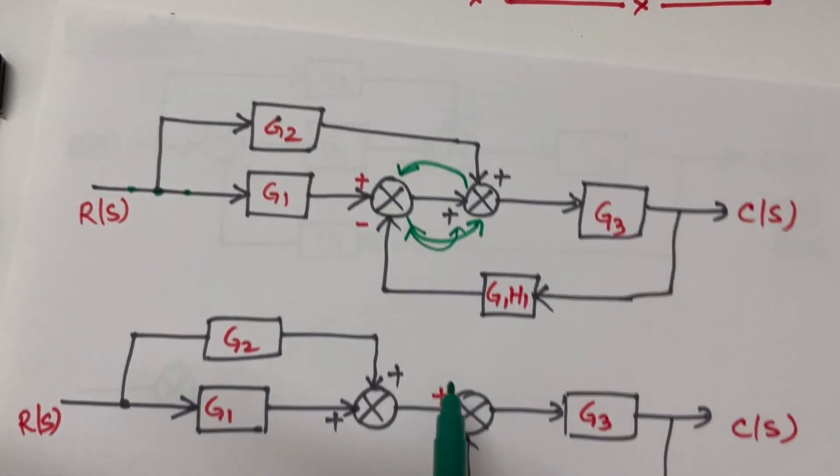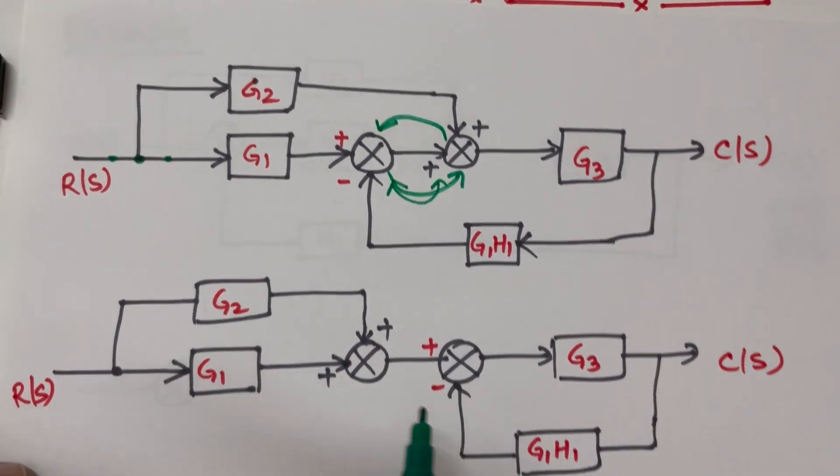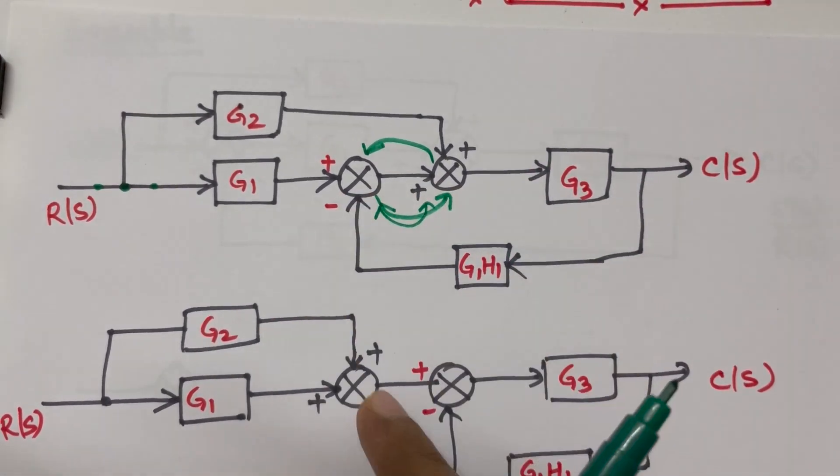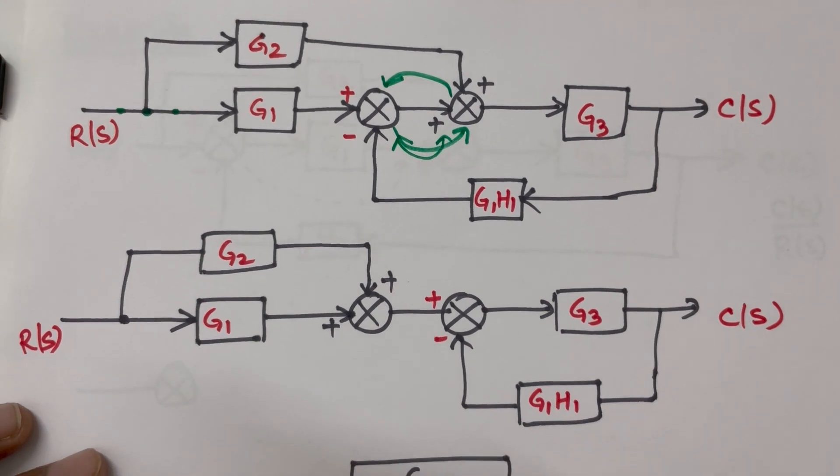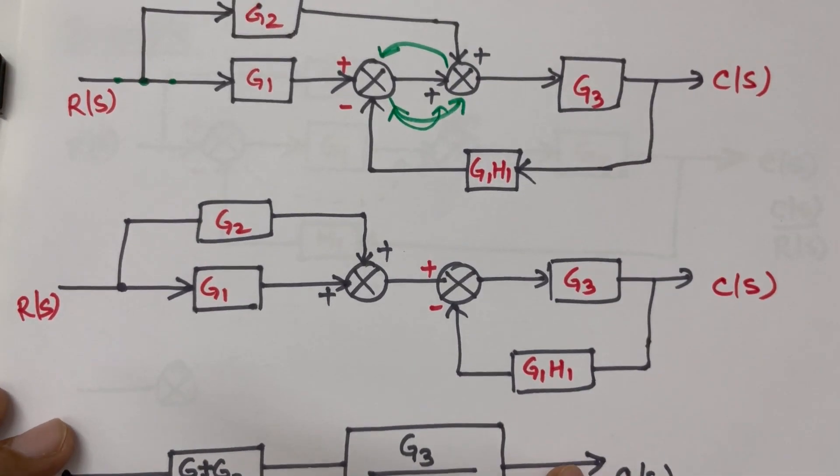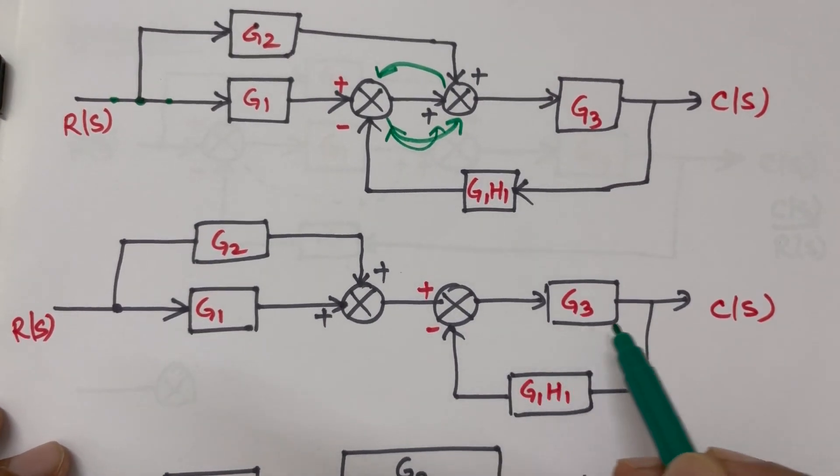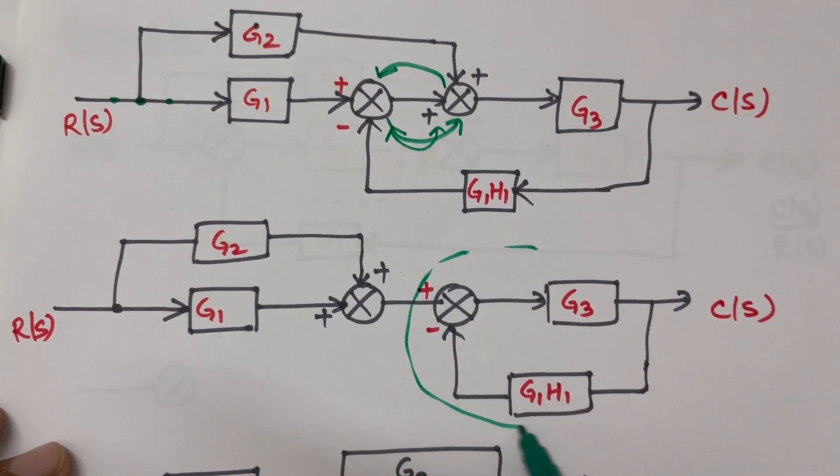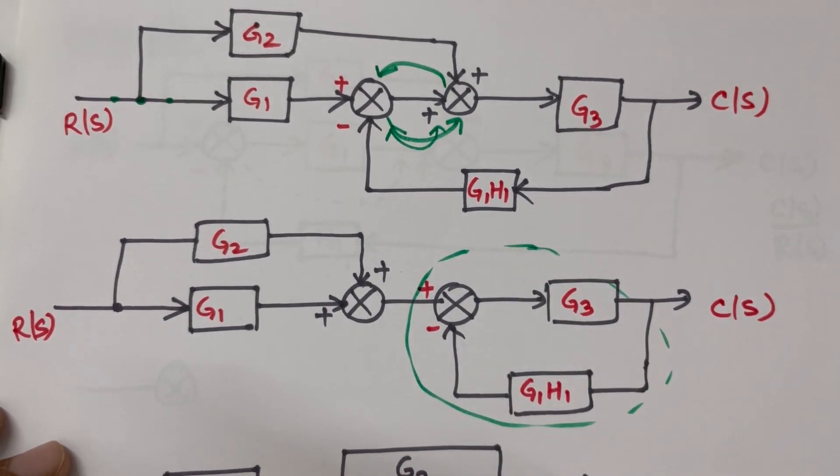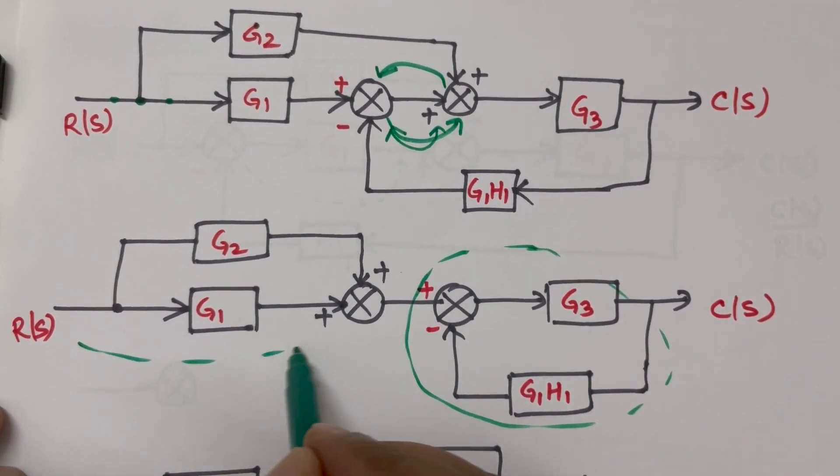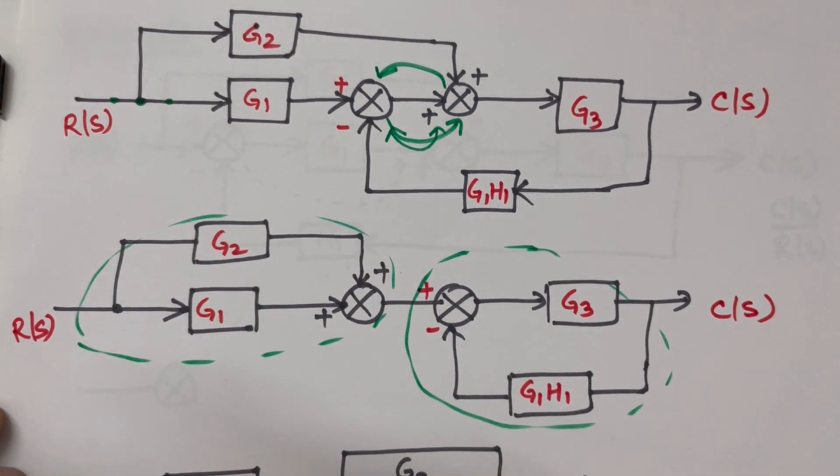So we have just interchanged this, nothing else - everything is same, we just interchanged this and it has become very simple problem. After interchanging you can see this is a feedback path transfer function and this one is a parallel combination.